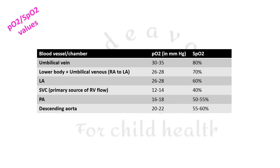These are the partial pressures of oxygen and SpO2 values in different vessels and chambers in fetal life. In the umbilical vein, SpO2 is maximum at 80% and PO2 is 30–35 mmHg. Blood in the inferior vena cava shunted to the left atrium via the foramen ovale has an SpO2 of around 70% and PO2 of 26–28 mmHg, so the left atrium has a PO2 of 26–28 and SpO2 of around 60%. The superior vena cava, the primary source of right ventricular outflow, has a PO2 of 12–14 mmHg and SpO2 of 50–55%. The descending aorta has a PO2 of 20–22 mmHg and SpO2 of 55–60%.